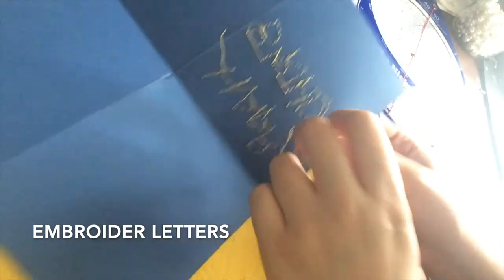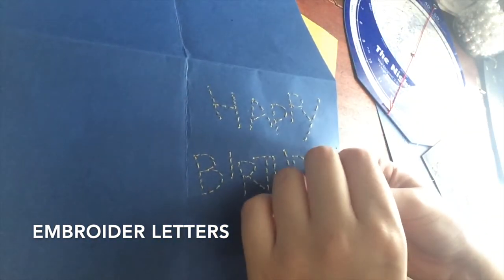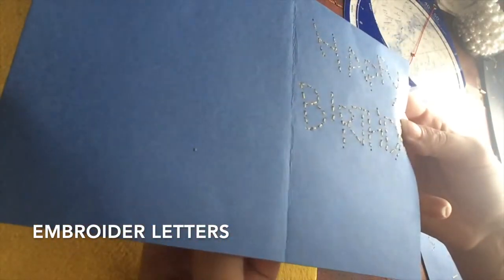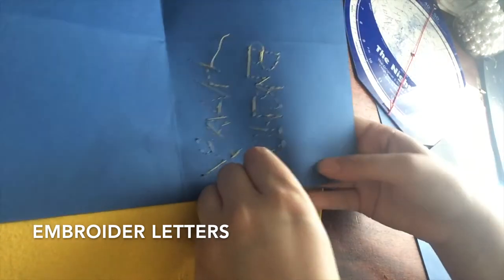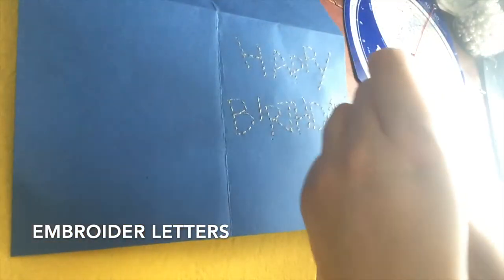I'm going to use the same technique to embroider the letters for this card. I've also got a number of beads and rhinestones that I'll be using to make the stars. So once I've finished the letters, I'm going to glue the rhinestones down and let them dry before I add the beads. I could have added the beads as I went, but I wanted to see what it would look like without them first.